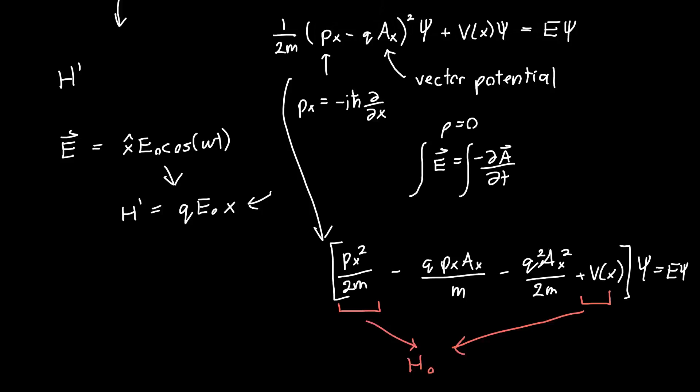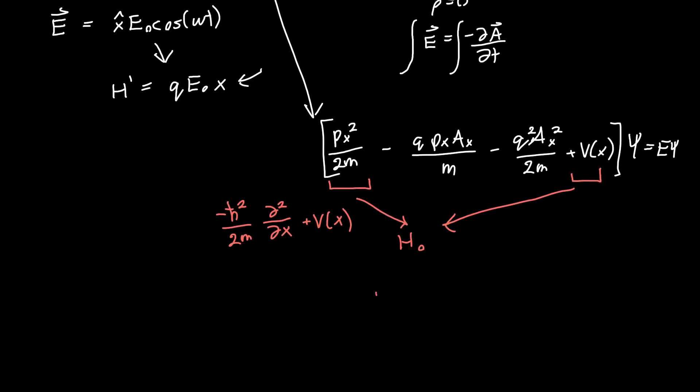Now this guy, so this term here added with this term here, this is just our old original Hamiltonian H₀. So -ℏ²/(2m) times the second derivative with respect to x plus V(x), this was just our original Hamiltonian. So we can just rewrite this real quick: H₀ - qpₓAₓ/m plus q²Aₓ²/(2m).